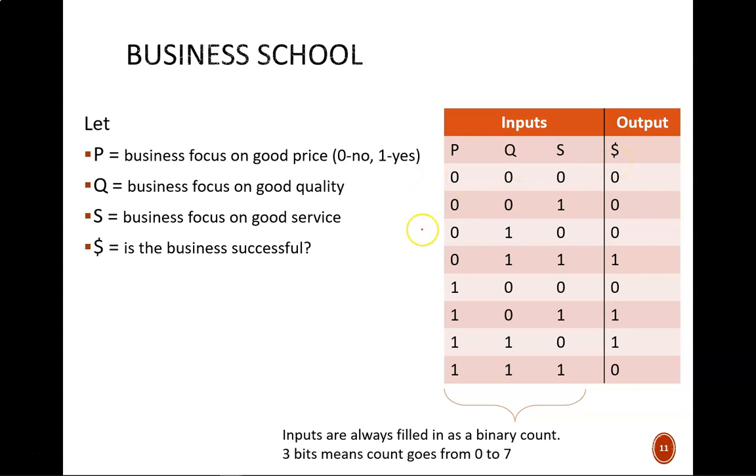Then I fill in the input combinations as a straight binary count. First row would be decimal zero. Second row is decimal one. Next row is decimal two. And so on, up through decimal seven. Of course, I end with eight total rows because there were three input variables.